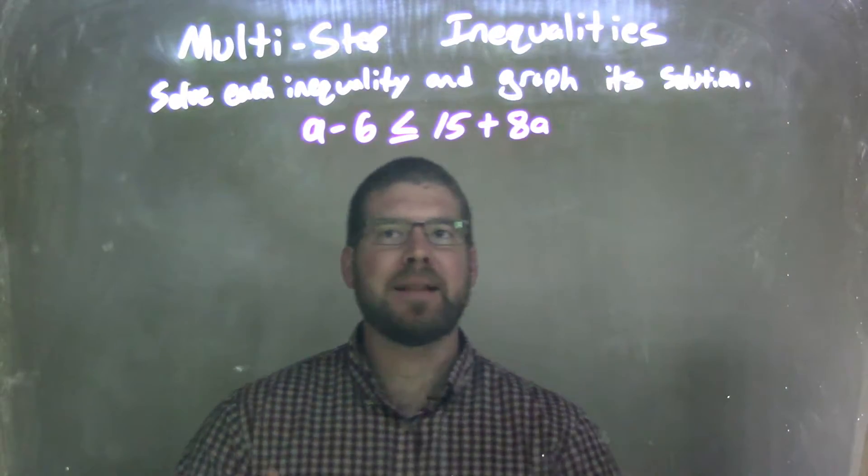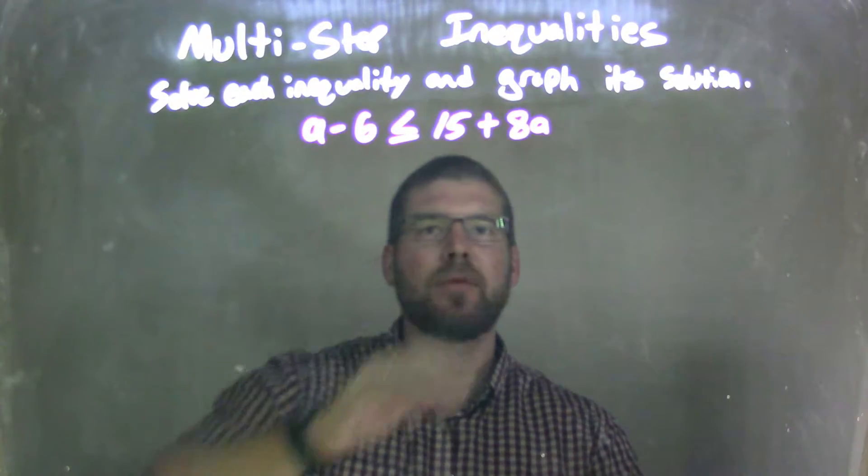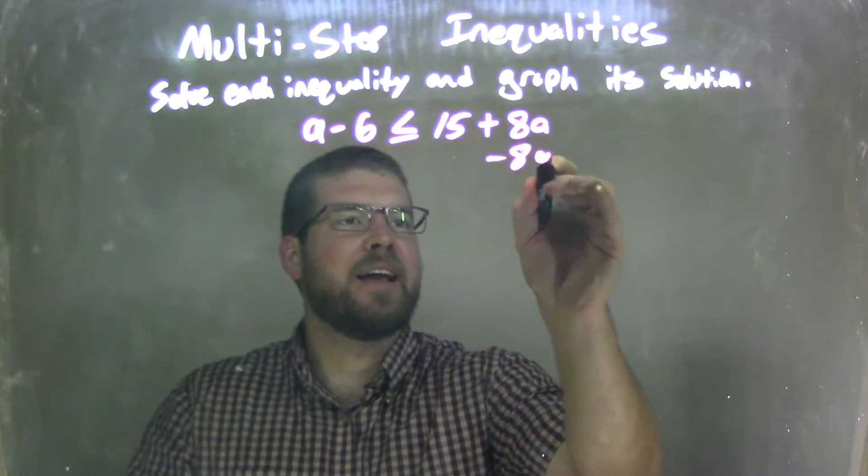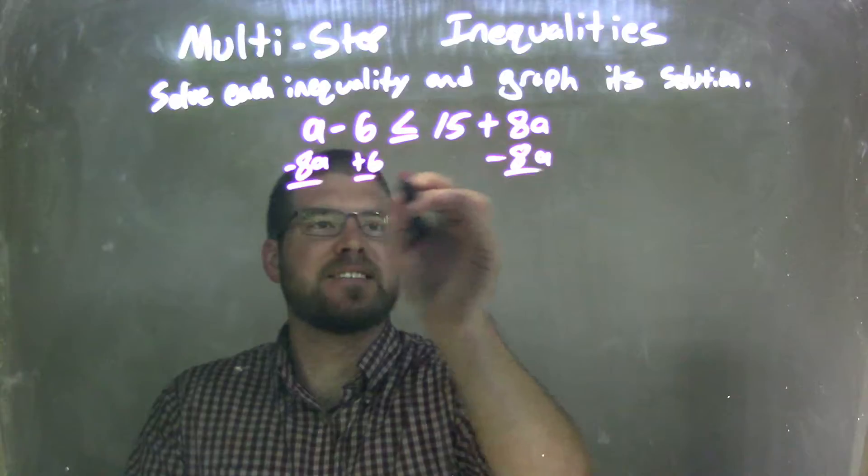I'm going to bring my a's over to the left and my numbers to the right. So I'm going to subtract 8a from both sides, and then I'm going to add 6 to both sides.